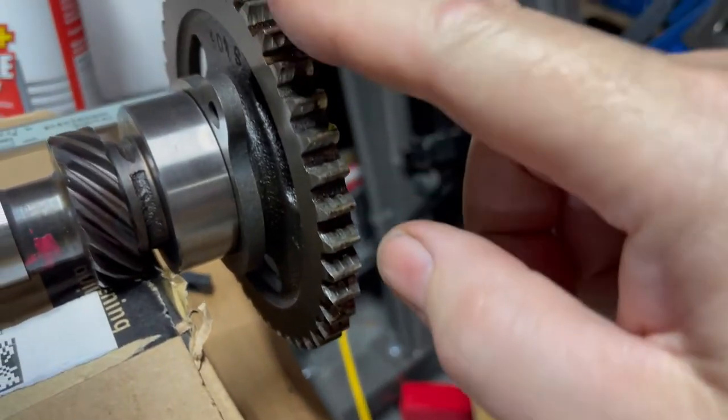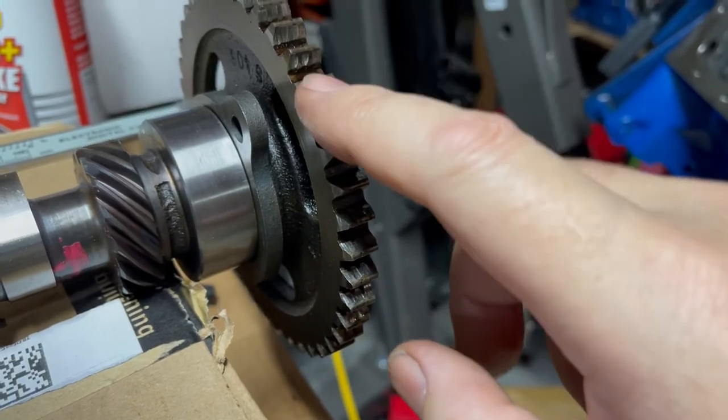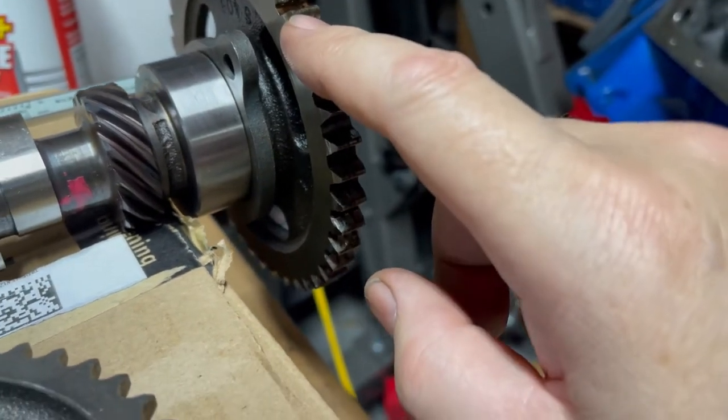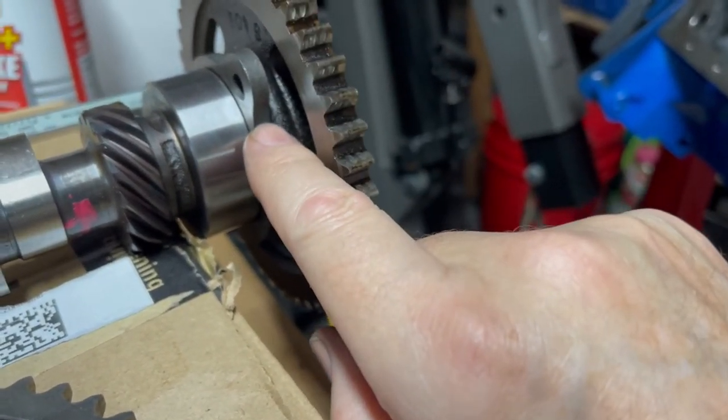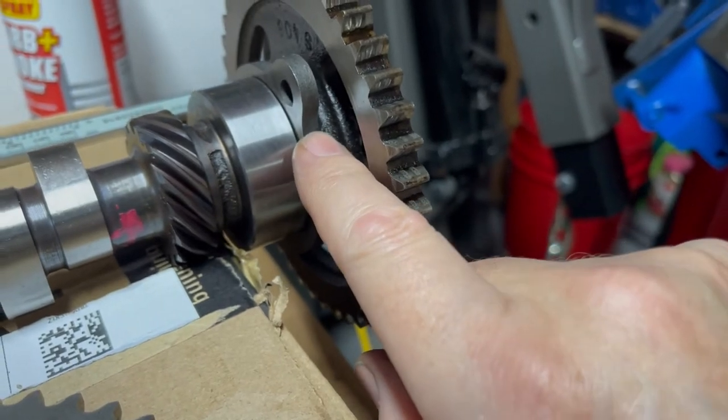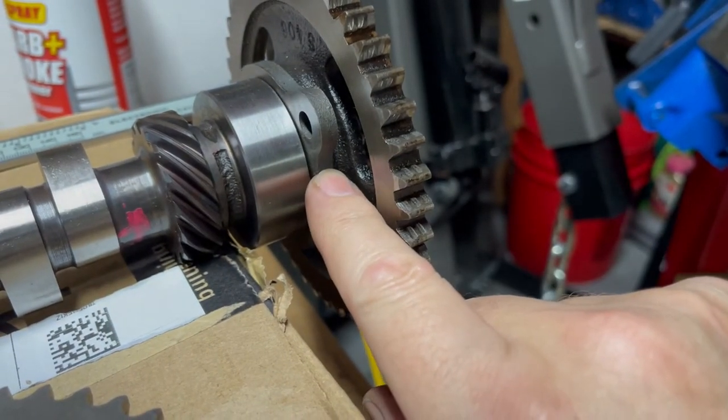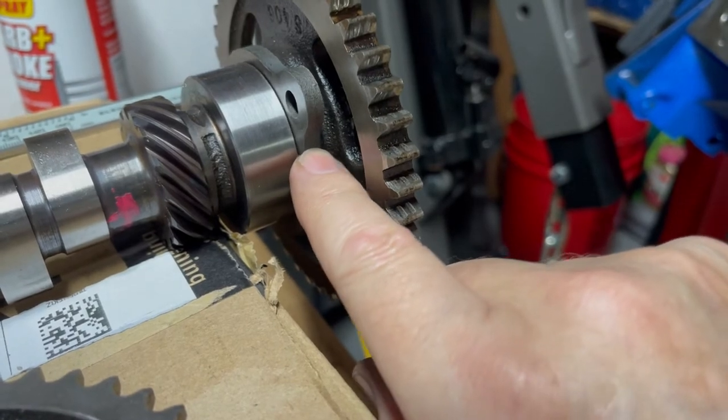So here I bolted up the old timing gear to the cam and I put the thrust bearing or thrust plate spacer in there. As you can see, this thing is very very loose.